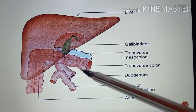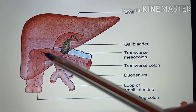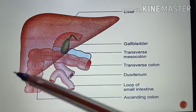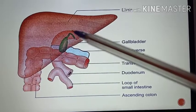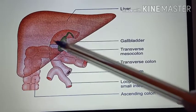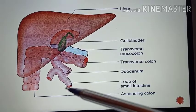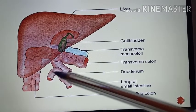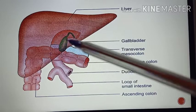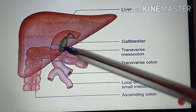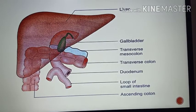In this picture, you can see the liver, the transverse colon, the ascending colon, the duodenum, the jejunum, and the gallbladder shown in green.